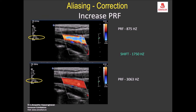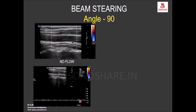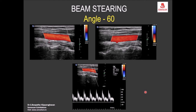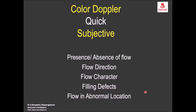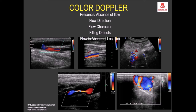Color priority settings control whether grayscale or color is given priority — with color priority, the grayscale is suppressed and color is displayed clearly. Beam steering must be used to give an appropriate angle relative to the blood flow direction. Frame rate and other parameters can all be analyzed together. The color box provides all flow information at once, and can reveal flow in abnormal locations such as in a pseudoaneurysm.